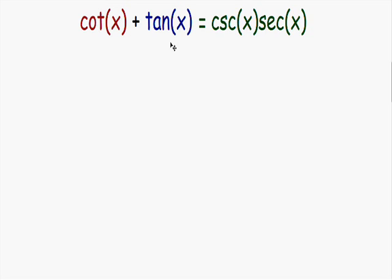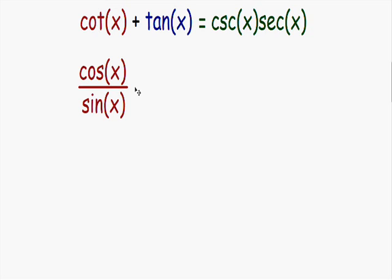The first thing I always like to do is rewrite everything on the left side in terms of sine and cosine. The cotangent of x is equal to the cosine of x divided by the sine of x — if you don't have this memorized, write it down. And the tangent of x is equal to the sine of x divided by the cosine of x, which is just the opposite of the cotangent.